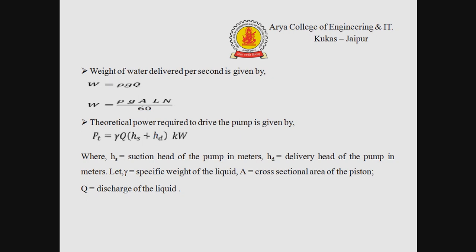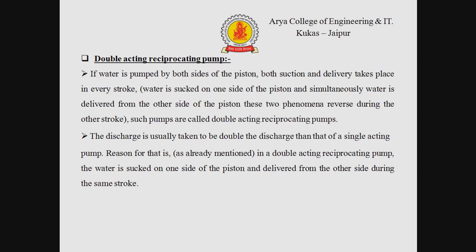The weight of water delivered per second is given by W = ρgQ = ρgALN / 60, where Q = ALN / 60. The theoretical power required to drive the pump is given by an equation involving HS, the suction head in meters; HD, the delivery head in meters; gamma, the specific weight of the liquid; A, the cross-sectional area of the piston; and Q, the discharge of the liquid.